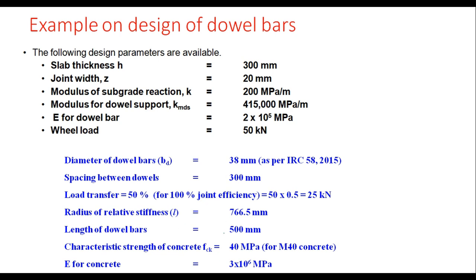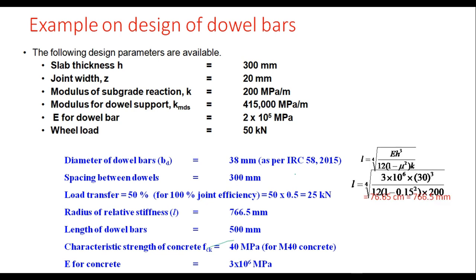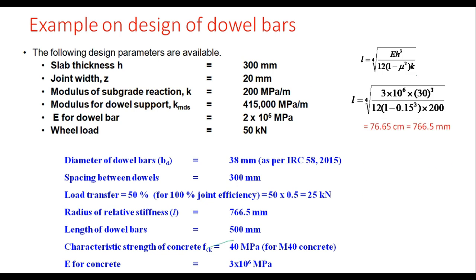The radius of relative stiffness L is calculated using the equation: L = fourth root of [EH³ / (12(1−μ²)K)], where E = 3×10⁶ MPa, H = 30 cm, and K = 200 MPa per meter. This gives L = 766.5 mm. The length of the dowel bar is taken as 500 mm. The characteristic strength of concrete is 40 MPa for M40 concrete and E for concrete is 3×10⁶ MPa.